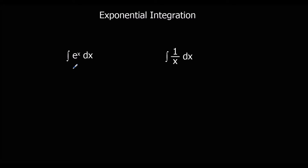Here we've got the integral of e to the power of x with respect to x. If you remember, when we differentiated e to the power of x it stayed as e to the power of x. So when we integrate it, it stays as e to the power of x. The integral of e to the power of x with respect to x is e to the power of x plus c.